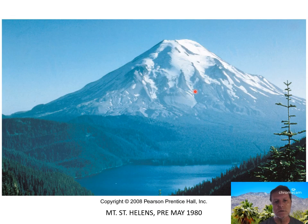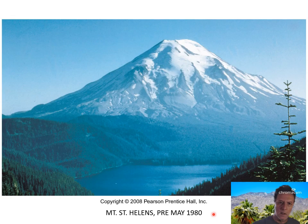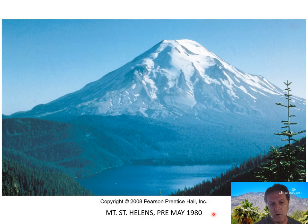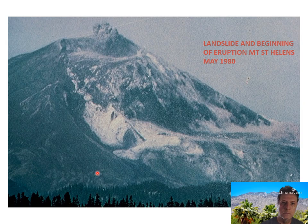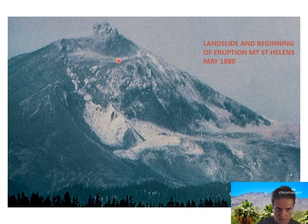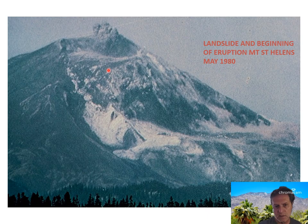Mount St. Helens is a beautiful composite stratovolcano. This is a photo taken before May 1980. It's one of the volcanoes in the Cascade Mountain chain in southern Canada, Washington, Oregon, and California. This is Mount St. Helens erupting after the occurrence of the landslide in May 1980. Here's the failure occurring as the whole north side of the mountain basically slid down and out, and here is the gas, steam, ash, and rock fragments being released from the pressure release caused by the landslide.